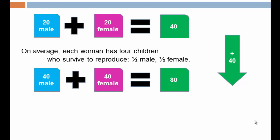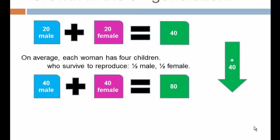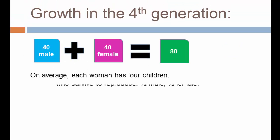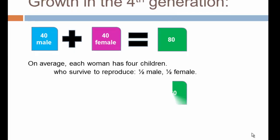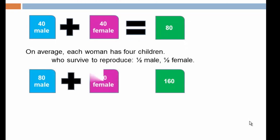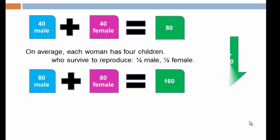Going from the third to the fourth generation, we start with 80. With the same assumptions we take 40 times 4 and get 160 for the fourth generation, made up of 80 males and 80 females. Our numerical increment of growth is 80 individuals.